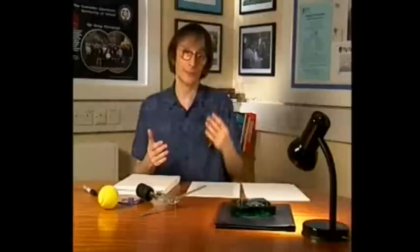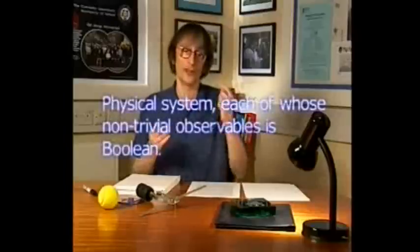Every 2 by 2 matrix has either one or two distinct eigenvalues, and therefore every observable of this minimal type of physical system is either a Boolean observable or a multiple of the unit observable. A physical system with that property that every one of its non-trivial observables is a Boolean observable is called a qubit.